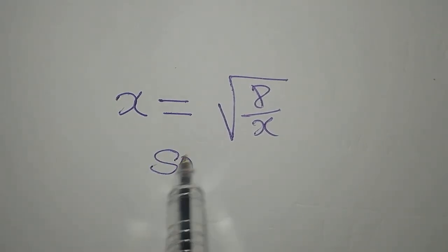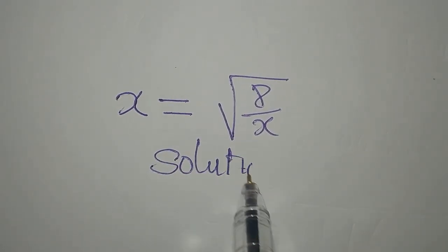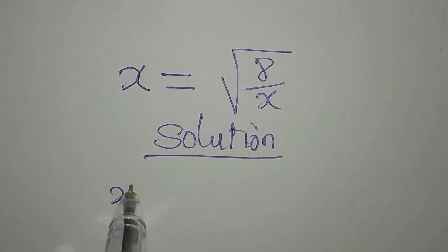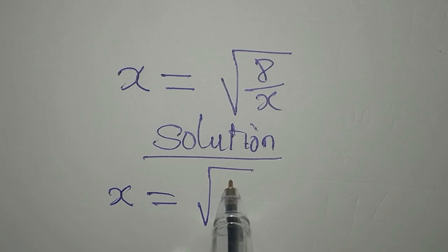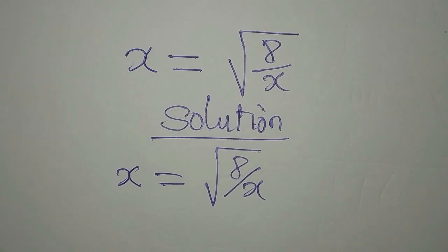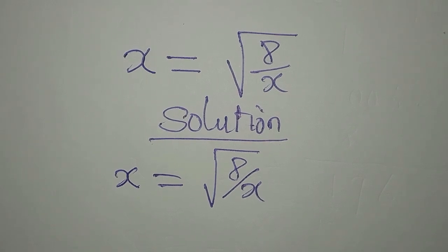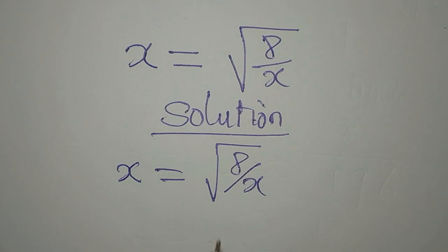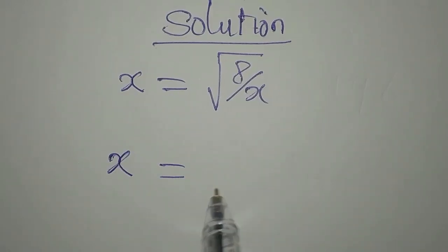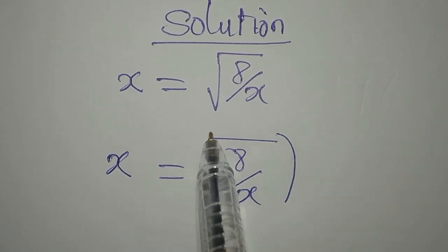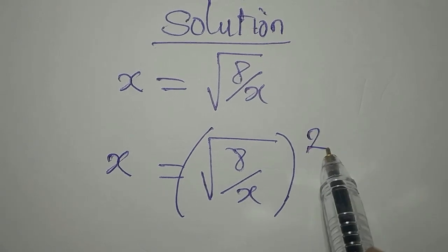Hello everyone, let's provide the solution to this problem: x equals square root of 8 over x. From here we are directed to get the complete solution. The first thing is to remove this square root, so we'll have x equals square root of 8 over x — and to remove this square root we'll have to square this.